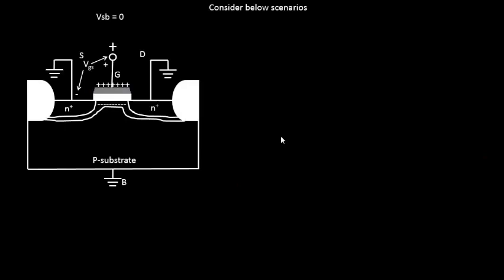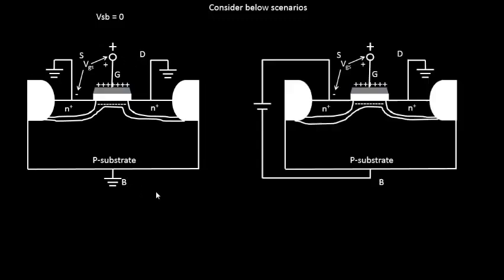Let's consider two different scenarios. The first one will be the same original one that we have been studying in the past videos, and the second one will have a potential applied between the body and the source — we will be calling it VSB as some positive potential.